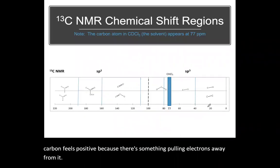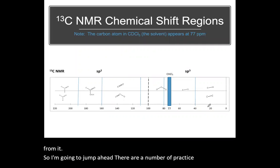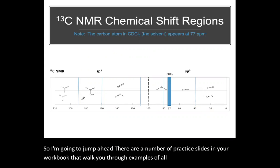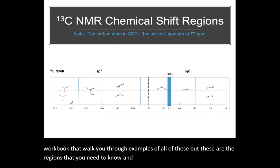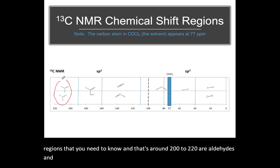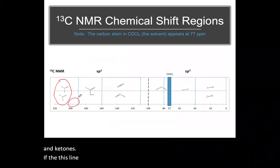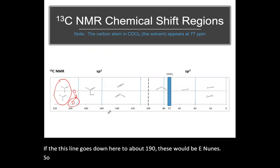So I'm going to jump ahead. There are a number of practice slides in your workbook that walk you through examples of all of these. But these are the regions that you need to know. And that's around 200 to 220 are aldehydes and ketones. If this line goes down here to about 190, these would be enones. So unsaturated ketones, 190 to 200. So pretty much anything above 190 is going to be a carbonyl.